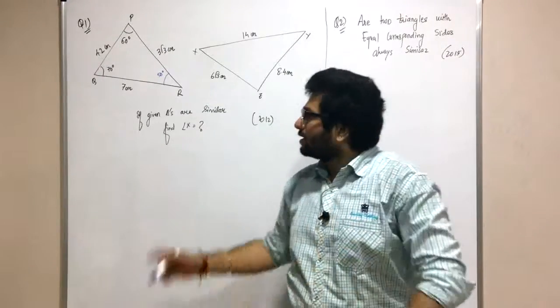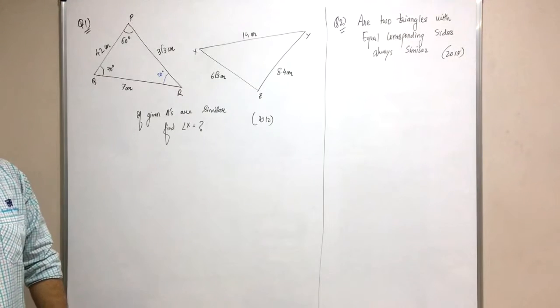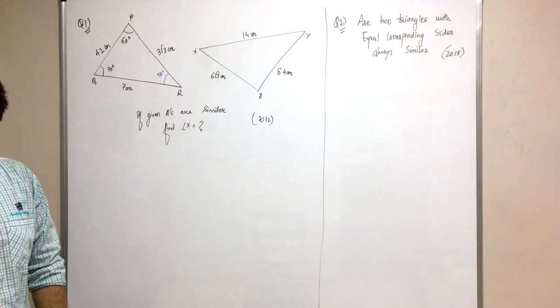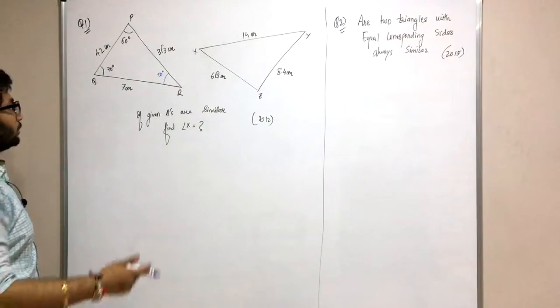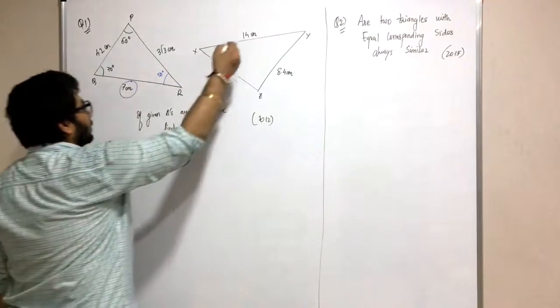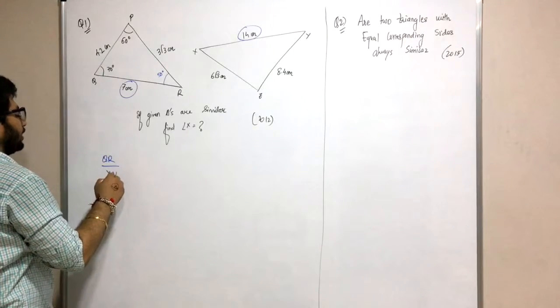The angles will be equal, but in which order? First I have to find the correspondence. How do I find the correspondence? I know that the ratios are equal. Let me identify which sides are equal. I can see QR by XY is half, and this one has 4, so 8 divided by 4 is half. That is PQ by XY.